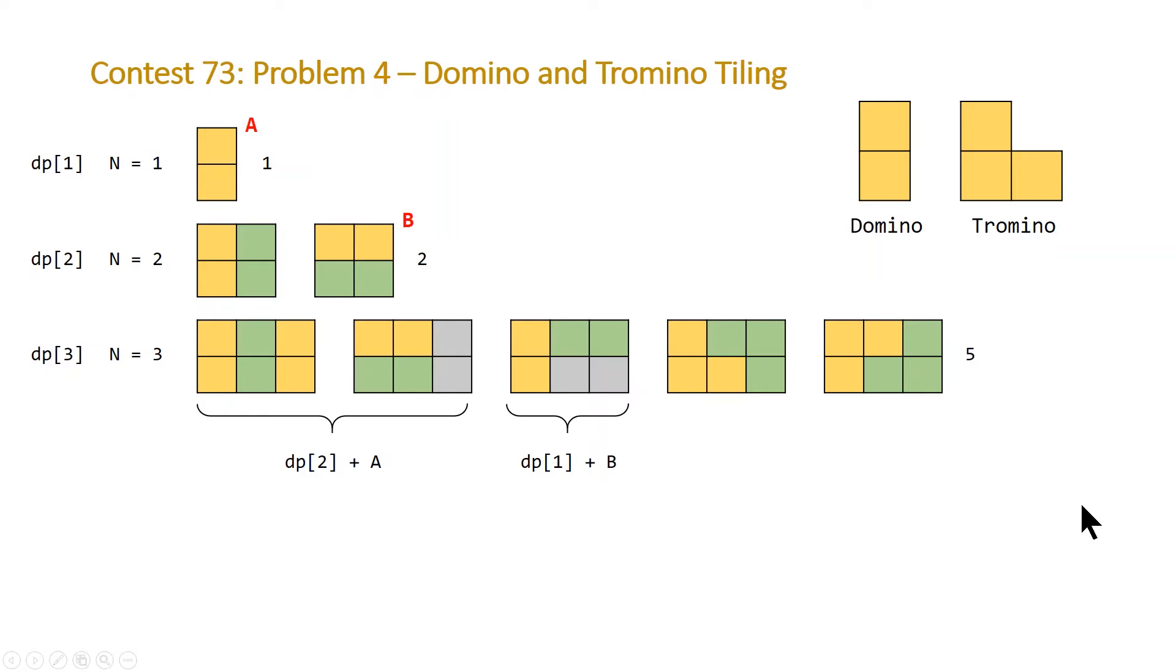So if we take a look at DP4 when n is equal to 4, and note we're going to call these two boards from DP3 equal to C, we have a similar pattern. So our answer is going to be equal to 11, and that's driven by DP3 plus A. So that's taking these five boards and appending a domino to each one, which gives us five boards.